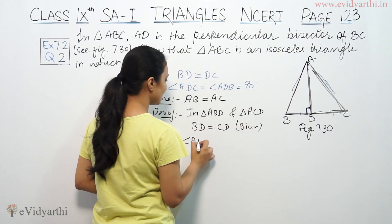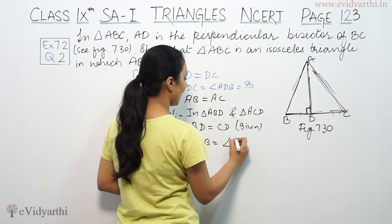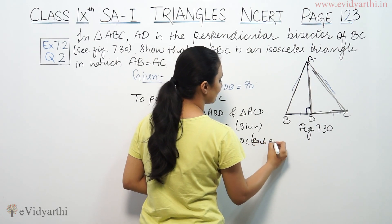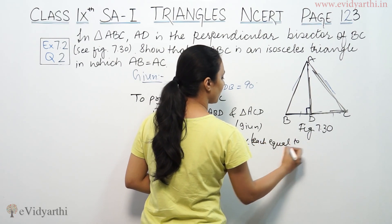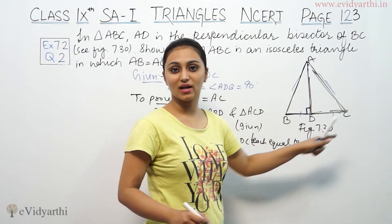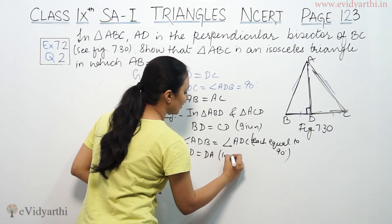In triangle ABD and triangle ACD, angle ADB is equal to angle ADC, which is equal to 90 degrees. The third thing that we have is AD is equal to DA, common.